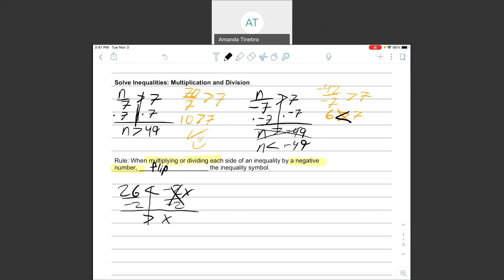I'm left with x on this side, 26 divided by negative 2 is negative 13. And my answer is negative 13 is greater than x.